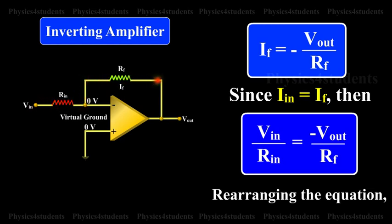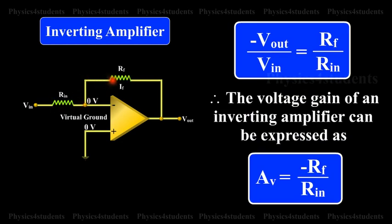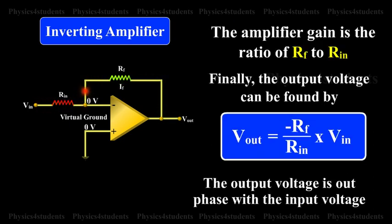Rearranging the equation, we obtain minus Vout by VIN is equal to RF by RIN. Therefore, the voltage gain of an inverting amplifier can be expressed as AV is equal to minus RF by RIN. The amplifier gain is the ratio of RF to RIN.